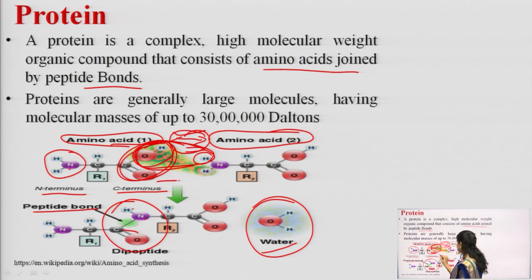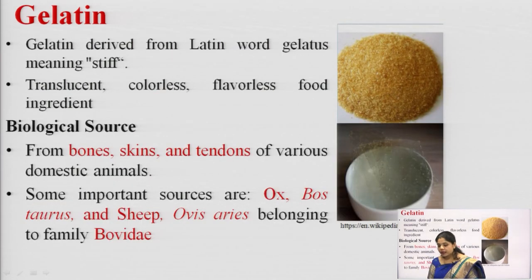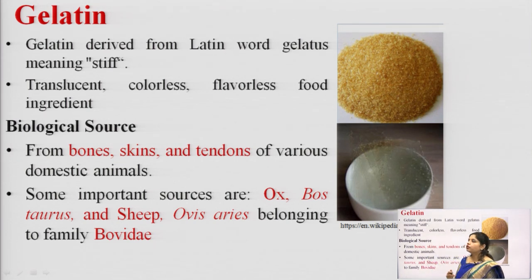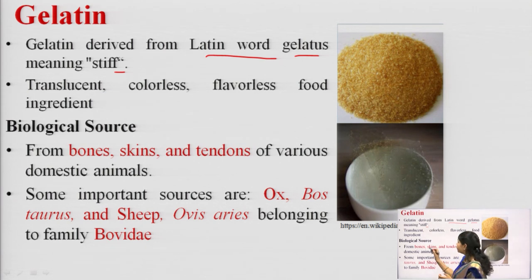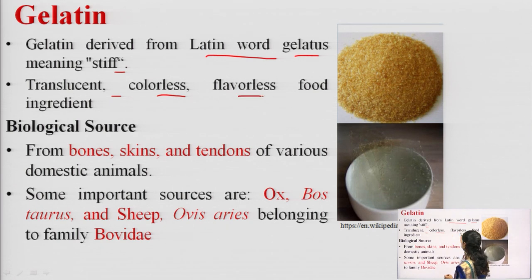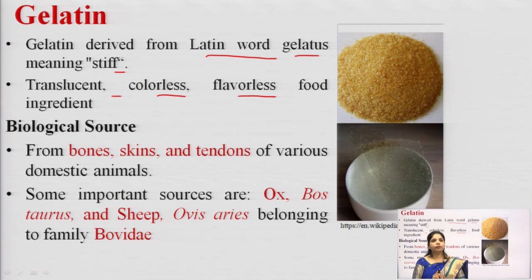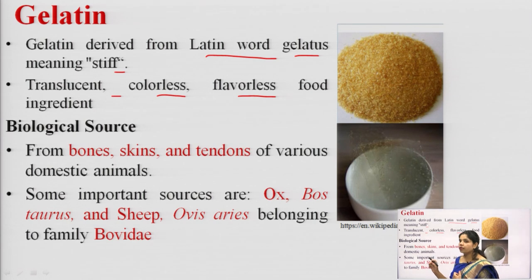The first protein-containing drug we discuss is gelatin. Gelatin is mainly derived from the Latin word 'gelatinus,' which means stiff — stiff means hard. It is a gelatinous substance; it is a translucent, colourless, flavourless food ingredient.